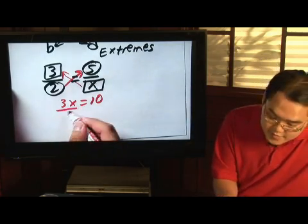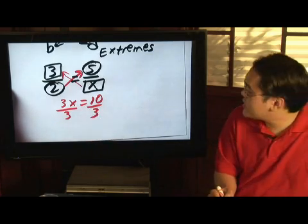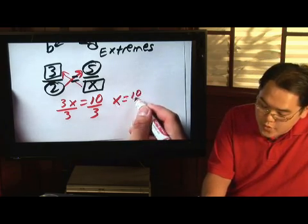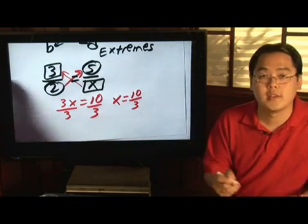Solving for X, divide 3 on both sides, and so you're going to have X is equal to 10 over 3, and that is how you solve it.